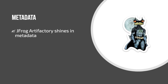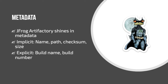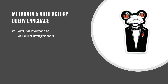JFROG Artifactory shines with metadata, and JFROG Container Registry inherited that. All three types of metadata exist: implicit metadata like file names, Docker image names, layer paths, checksums, and sizes; explicit metadata like how it was created, the build name, and build number; and any custom metadata you want to add, such as QA state or target architecture. You can set this through build integration and JFROG CLI, REST API and matrix params, or even the UI.